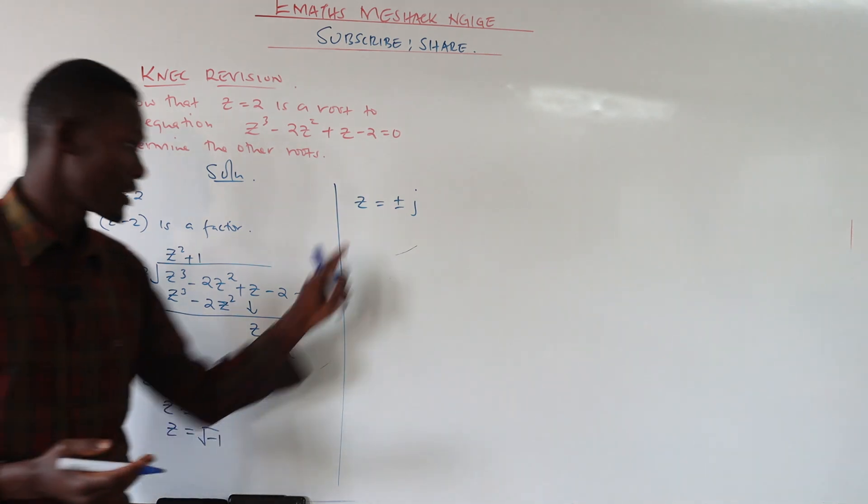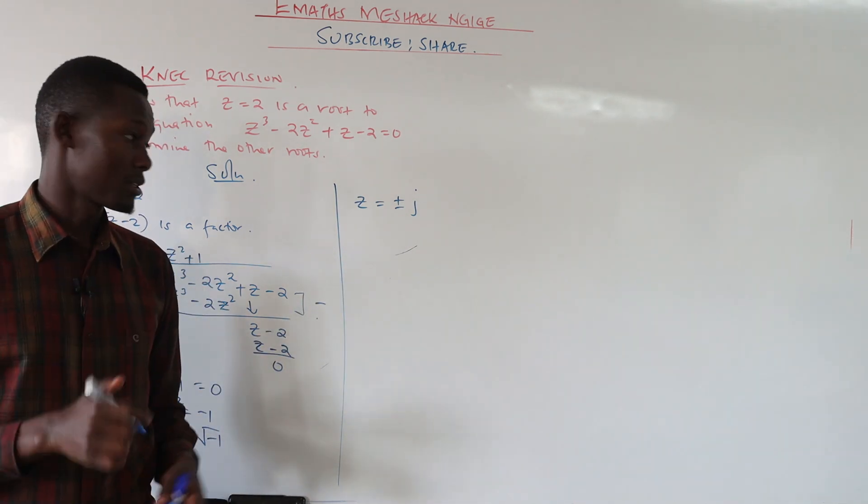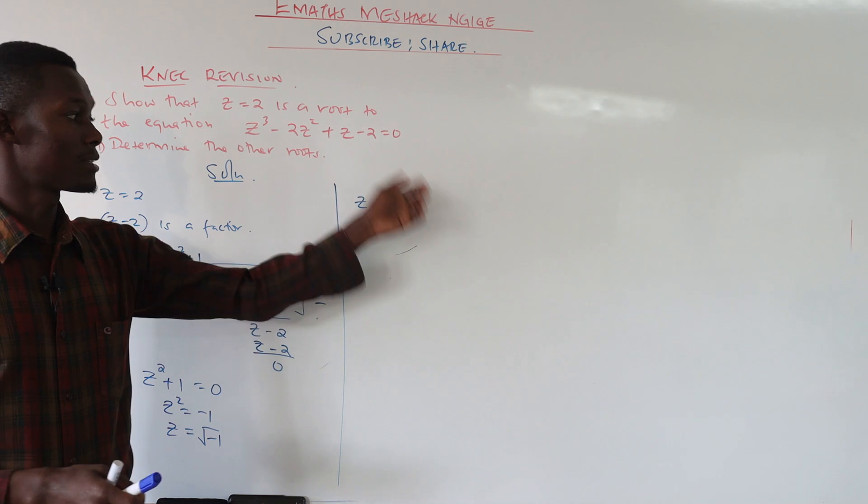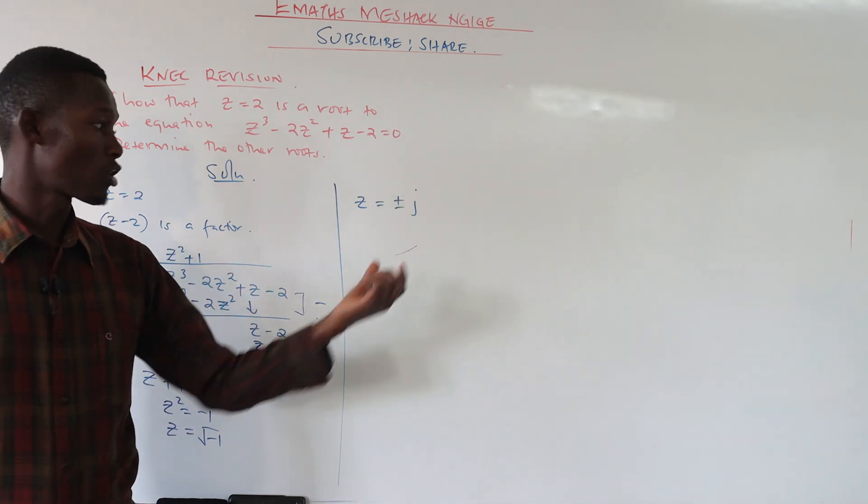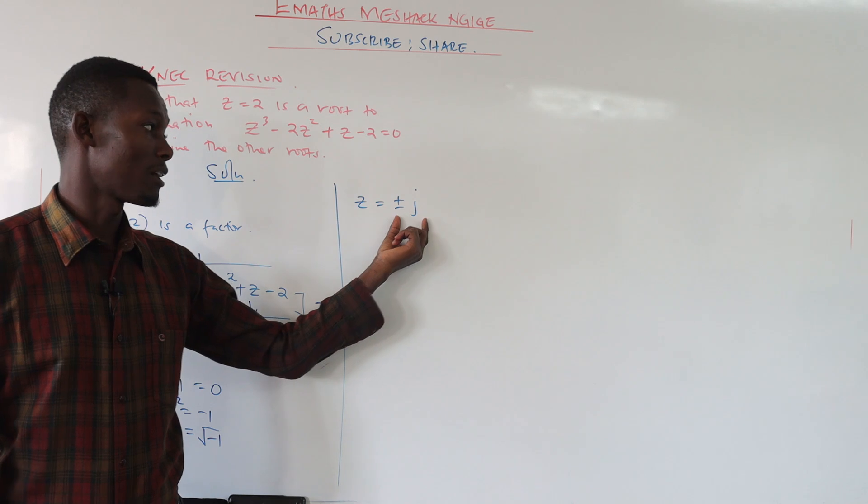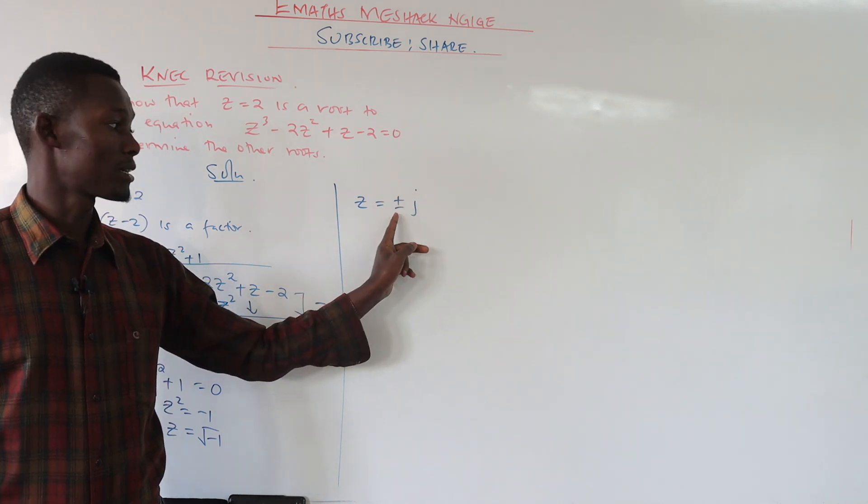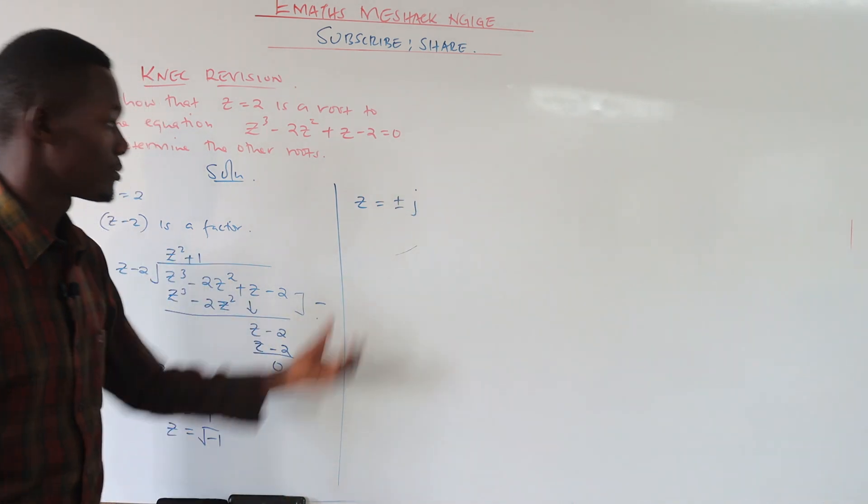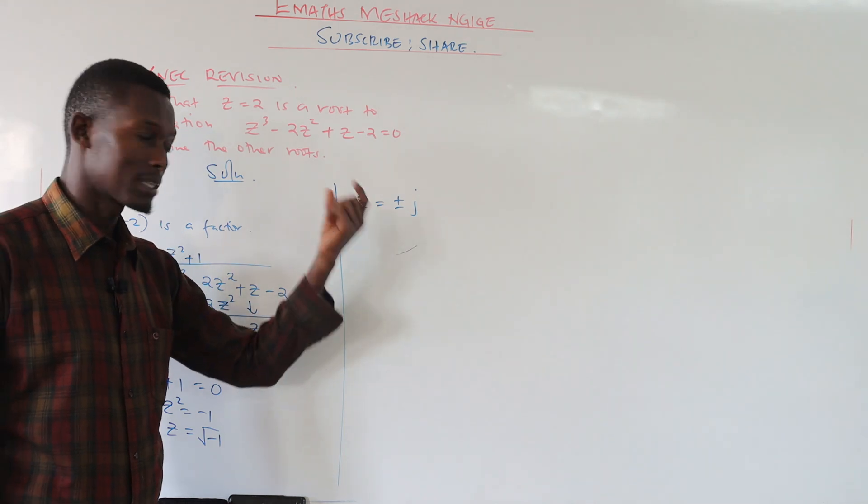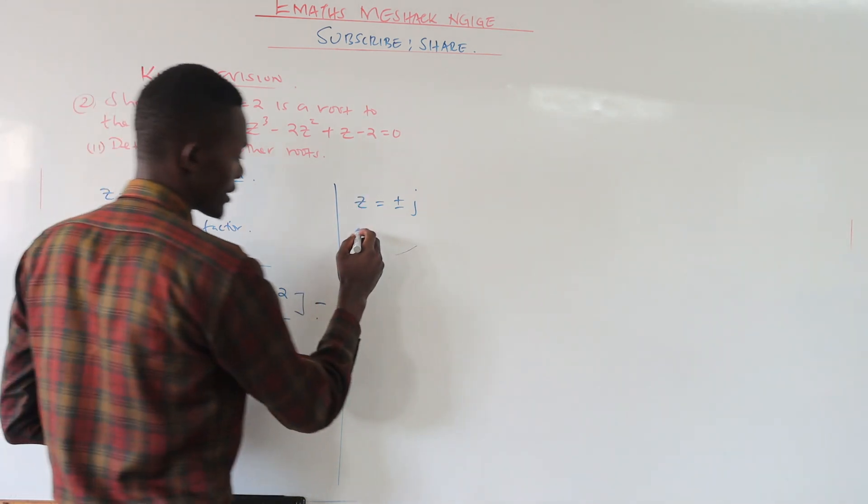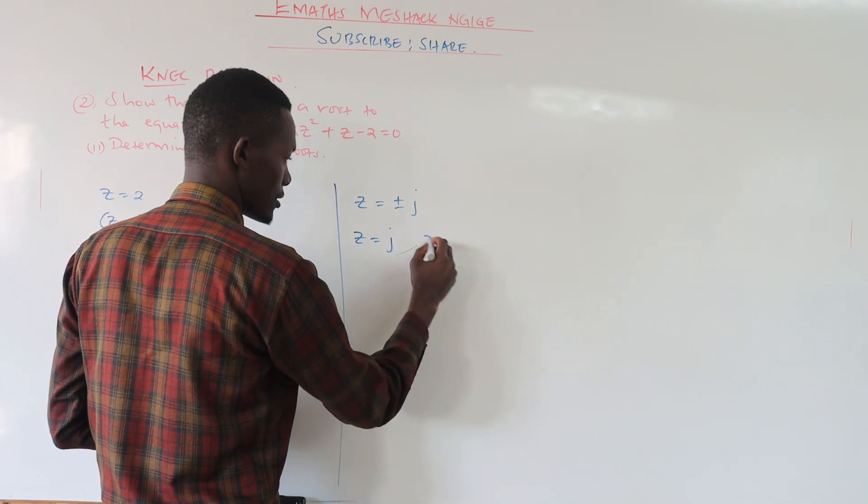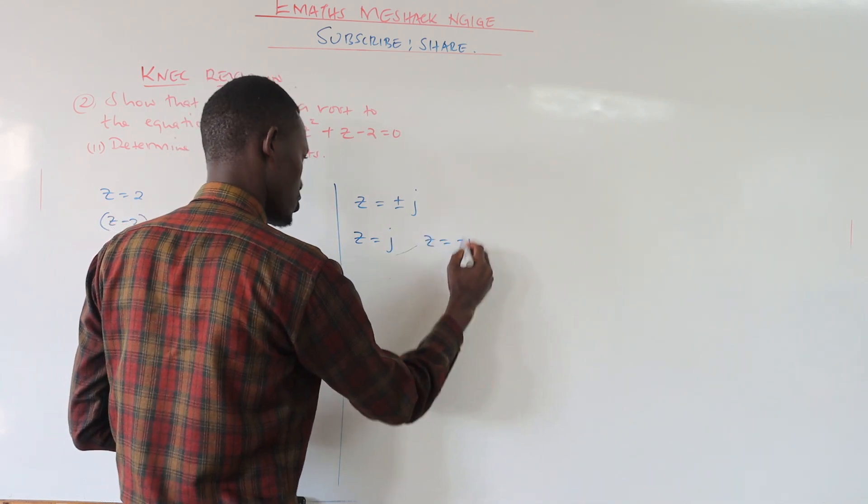How many solutions do we have by the end of the day? We have two solutions. Now you can see in this case our complex number has occurred in pairs. We have a positive j and we must also have a negative j because it has the complex part in it.